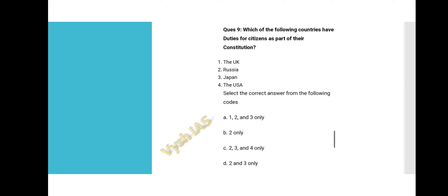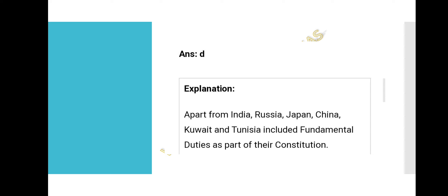Question 9: Which of the following countries have duties for citizens as part of their constitution? UK, Russia, Japan, USA. Option D, 'two and three only,' is correct — Russia and Japan have duties for citizens as part of their constitution. Apart from India, Russia, Japan, China, Kuwait, and Tunisia have included fundamental duties as part of their constitution.